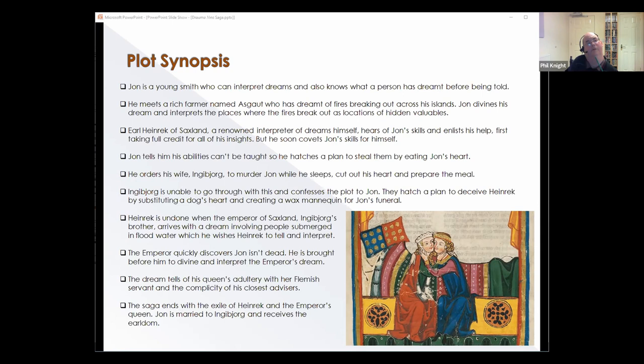Earl Heinrich of Saxland, who is himself a renowned interpreter of dreams, learns of John's skills and enlists his help. At first Heinrich takes full credit for John's insights, but pretty soon he covets John's skills for himself. John tells him his abilities can't be taught, so he hatches a plan to steal them by eating John's heart. Heinrich orders his wife Ingeborg to creep into John's room and murder him while he sleeps, then cut out his heart and prepare it in a meal.